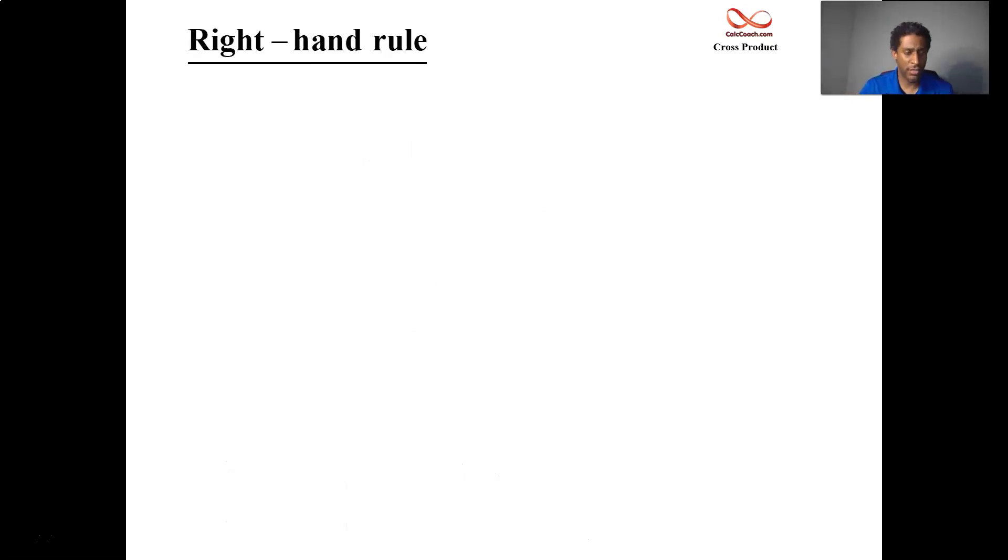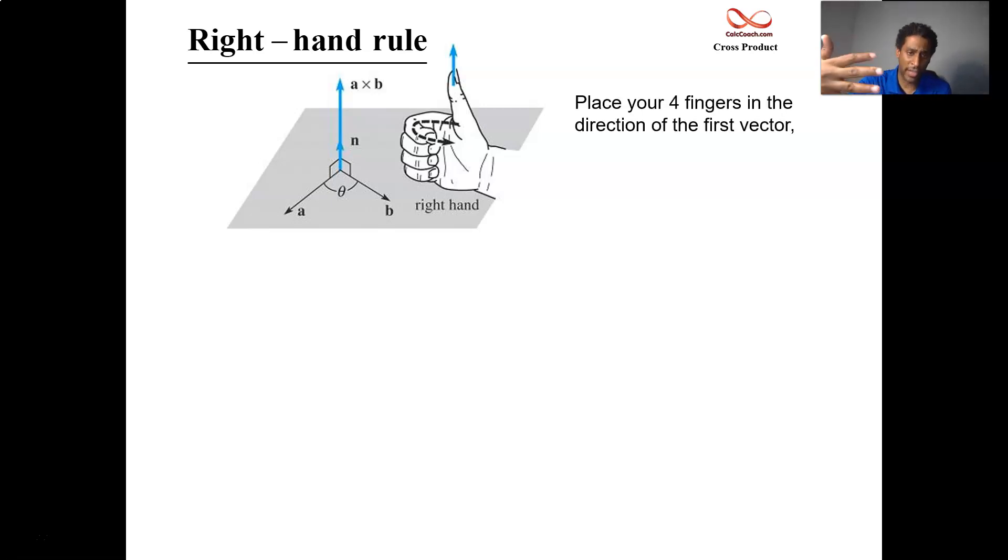It works like this. You have two vectors, A and B, and you want to take their cross product. Using your right hand, you can then figure out the direction in which the cross product vector points. Here's how it works. You take your right hand and you take the four fingers of your right hand and place them along the direction of your first vector. And then you curl them in the direction of the second vector. The direction in which your thumb points is going to be the direction in which the cross product vector should point.